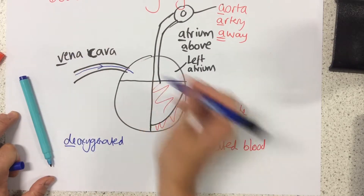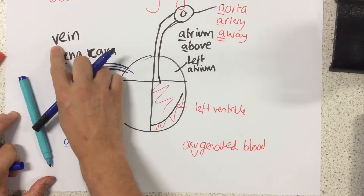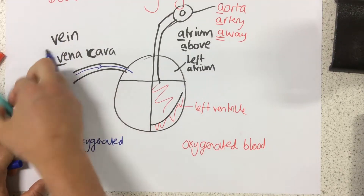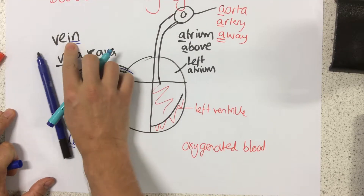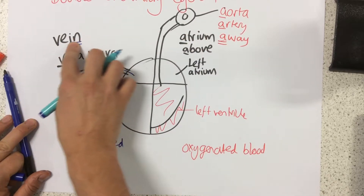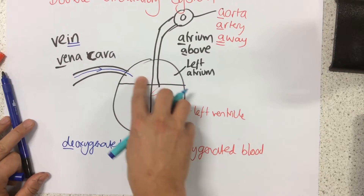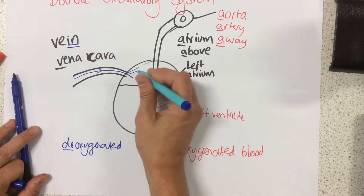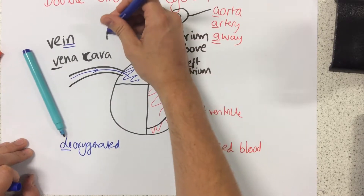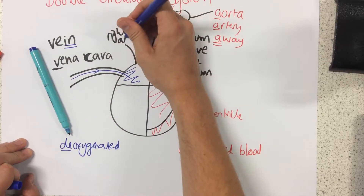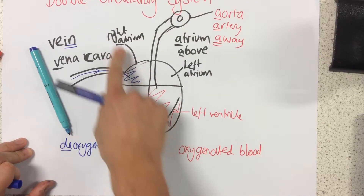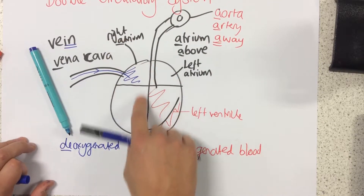The vena cava is a vein. The nice way of remembering what veins do is they take blood into the heart. So arteries — A for away — and veins take blood in. Now this particular part of the heart contains deoxygenated blood and it's called the right atrium. Remember, atria are above the ventricles.